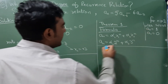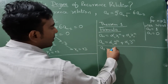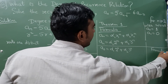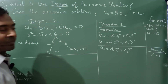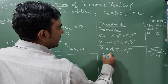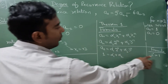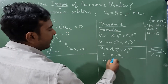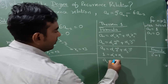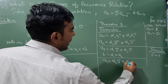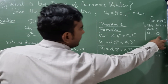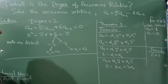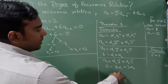Now apply the initial conditions. For a₀, n = 0: α₁·2⁰ + α₂·3⁰ = a₀. Remember, everything raised to 0 is 1, so 1 = α₁ + α₂. Next, for a₁, n = 1: α₁·2¹ + α₂·3¹ = a₁ = 0. This gives 2α₁ + 3α₂ = 0.